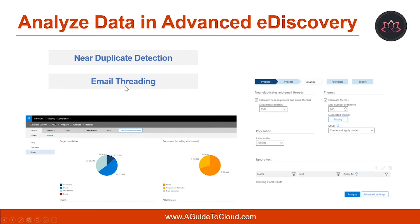Email threading parses each email and deconstructs it into individual messages. Each email is a chain of individual messages. It then analyzes all emails in the working set to determine whether an email has unique content or if the chain is wholly contained in a different email. In the end, emails are divided into four categories: inclusive, inclusive minus, inclusive copy, and none.